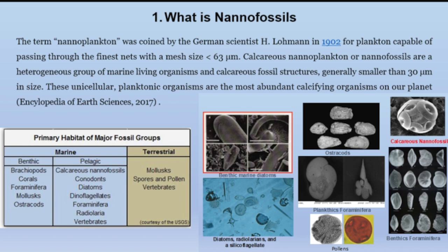Di tengahnya bisa dilihat ada ostracoda, yang juga terbentuk di marine merupakan bentik marine fosil. Kemudian ada planktonic foraminifera, dan di bawahnya ada pollen yang termasuk dalam mikrofosil dengan habitatnya di terrestrial. Dan di sebelah kanan, bagian kanan, itu adalah kalkarius nanofosil, yaitu nanoplankton atau nanofosil yang akan kita bahas hari ini. Dan di bawahnya itu ada bentik foraminifera.